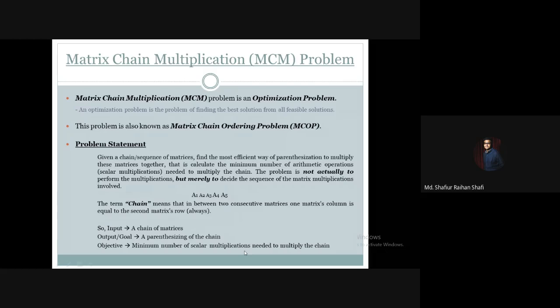Parenthesization indicates the order of multiplication. For example, if we parenthesize A4 and A5 together, it means we multiply them first. If we parenthesize A1 through A3 together, we multiply A1, A2, and A3 as a group. The problem's target is to find the parenthesization — that is, the order of multiplication — such that the total minimum number of scalar multiplications is required for the entire chain.